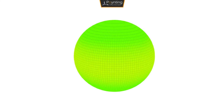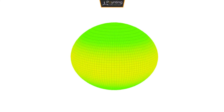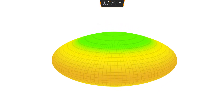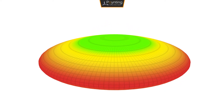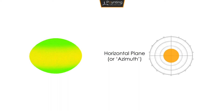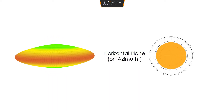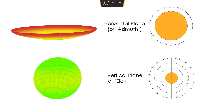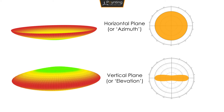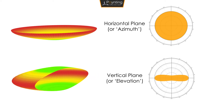When we look at antenna radiation patterns, it is important to note that we are looking at two-dimensional renditions of what is happening in three-dimensional space. The horizontal plane, or azimuth plane, is a view of the pattern from the top, as if it were sliced down the middle. The vertical plane, or elevation plane, is a view of the pattern from the side, as if it were sliced down the middle.